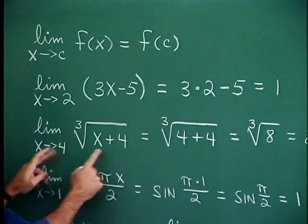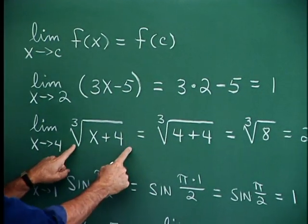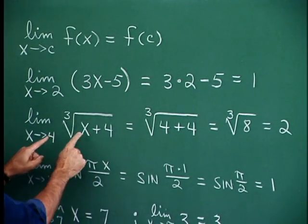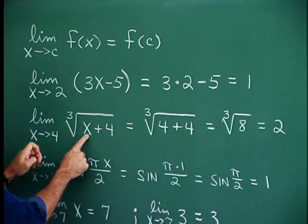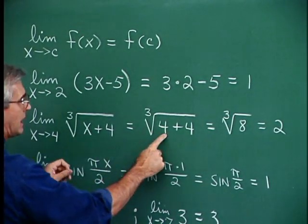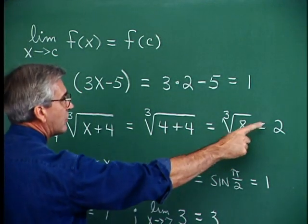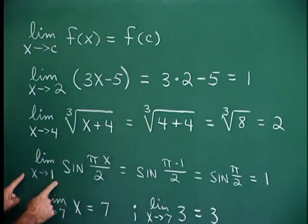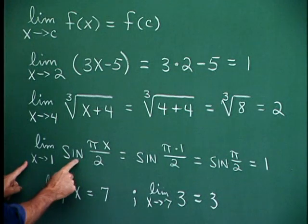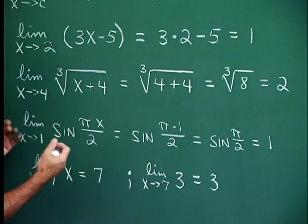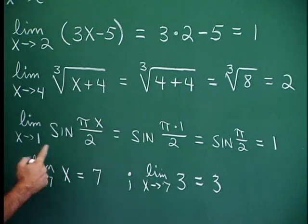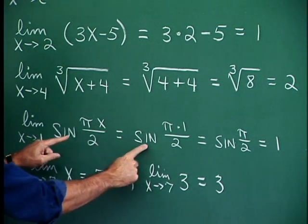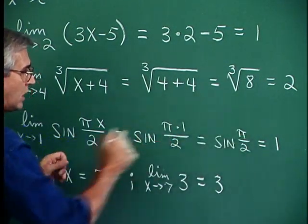The limit as x approaches 4 of this expression means what is f of 4? Put 4 in place of x and we have 4 and 4 — 8. The cube root of 8 would be 2. The limit as x approaches 1 of the sine of this fraction looks kind of imposing, but it's no big deal. Replace x with 1 and we have the sine of pi over 2, which is 1.